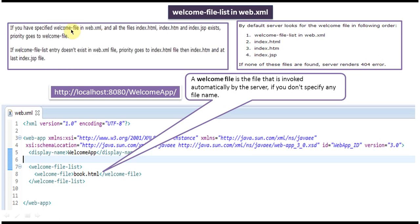If you have specified a welcome file in web.xml and files like index.html, index.htm, and index.jsp also exist in the project, then priority will be given to the welcome file only. So welcome-file-list is the first priority. If welcome-file-list entry is not there in web.xml, then priority goes to index.html first, then index.htm second, and finally index.jsp. That is about welcome-file-list in web.xml. Thanks for watching.